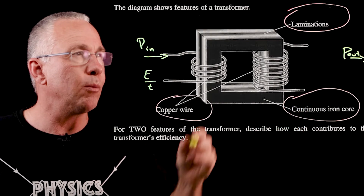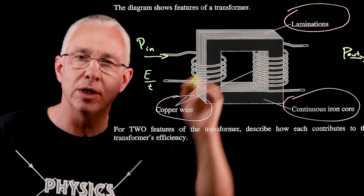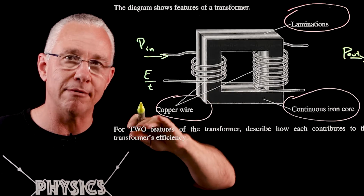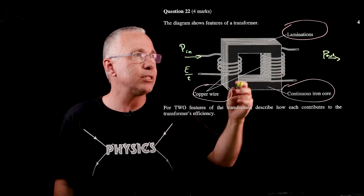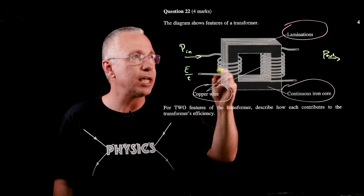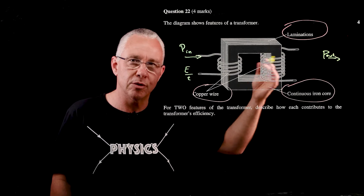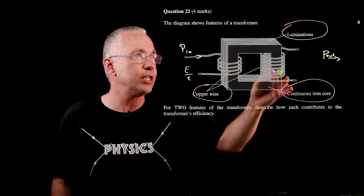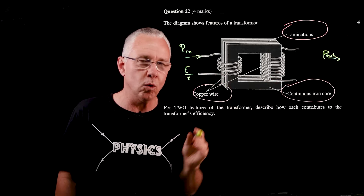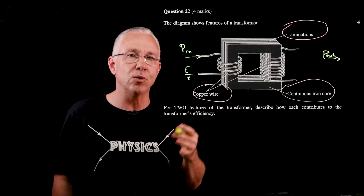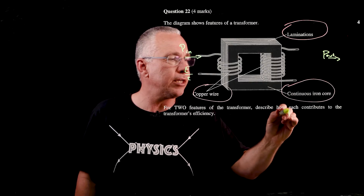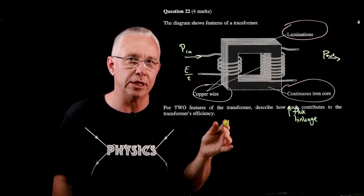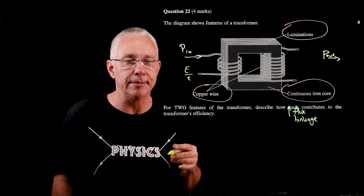The second feature is the continuous iron core. The secondary coil experiences a rate of change of flux, resulting in electromagnetic induction. To maximise this, we want maximum flux linkage in the coil — introducing an iron core increases the flux linkage. With increased flux linkage, we reduce power and energy loss, therefore increasing the efficiency of the transformer.